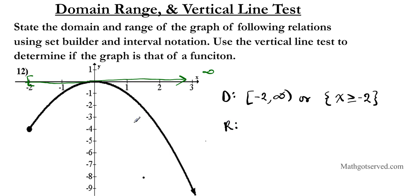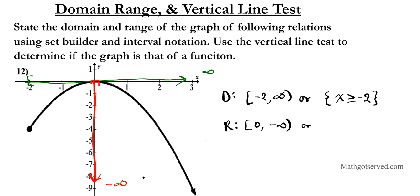Now for the range — the range is the vertical span of your graph, the projection of the graph on the y-axis. Looking at the graph, the highest point is y equals zero, included, and it goes all the way down to negative infinity. So the range is from zero all the way down to negative infinity. Using inequality notation, y is less than or equal to zero.